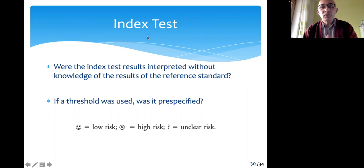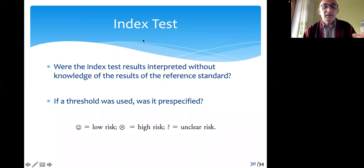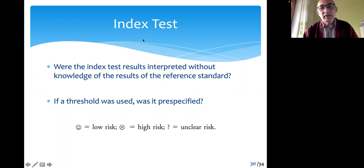Then the index test — we need to have an index test to diagnose. In the previous example, the index test was the CPK. We use the CPK to put a label, but actually the 100% correct diagnosis for muscular dystrophy would be a genetic analysis or a biopsy — a muscle biopsy, for example. This would be the gold standard. You always need a gold standard to decide whether the condition exists or not.